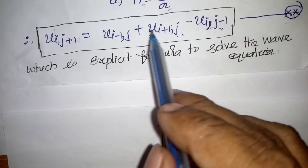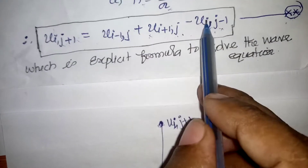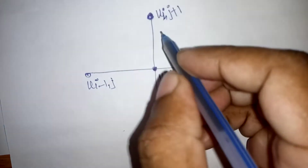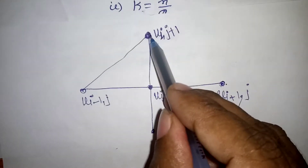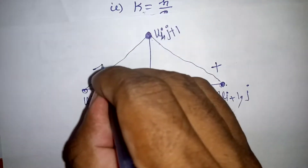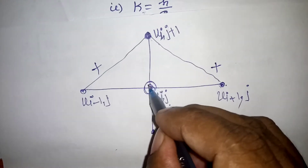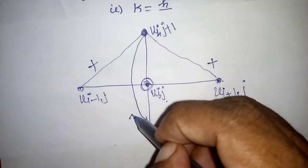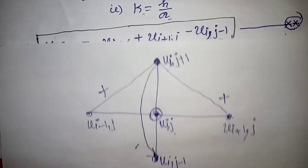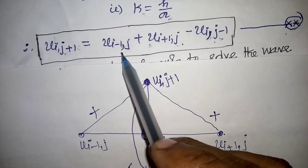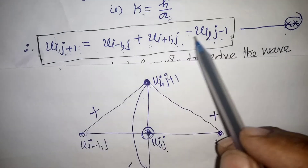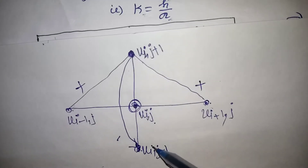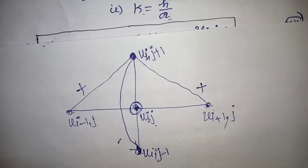The formula states that u(i, j+1) equals the sum of the two horizontal neighbor points u(i−1,j) and u(i+1,j), minus the point directly below u(i, j−1). This is the graphical/pictorial representation of the explicit algorithm.